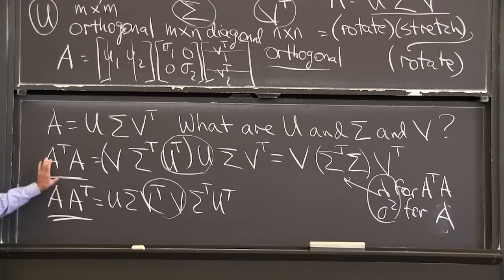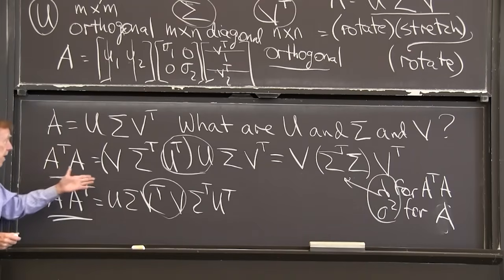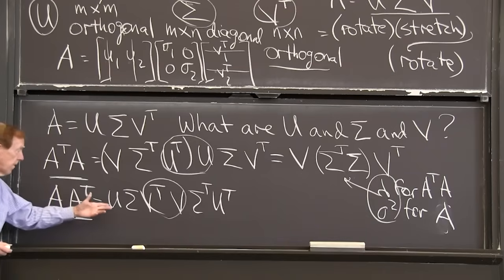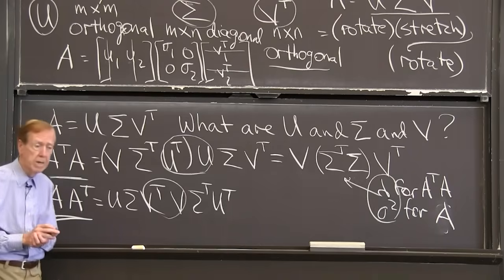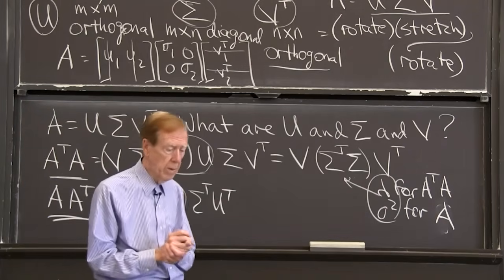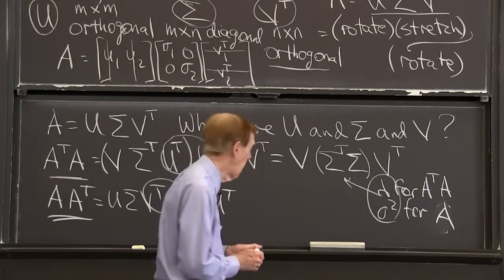These have the same eigenvalues. A times B has the same eigenvalues as B times A. In this case, it comes out here. Same eigenvalues. This has eigenvectors V, this has eigenvectors U, and those are the V and the U in the singular value decomposition. I have to show you an example. I have to show you an example and an application. And that's it.